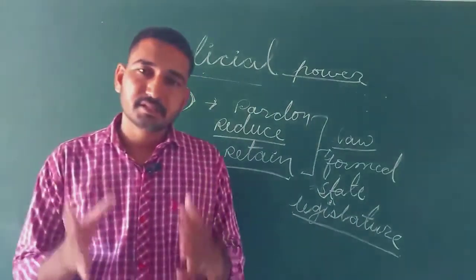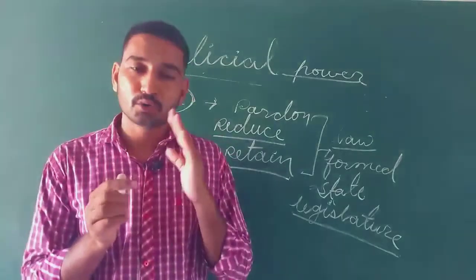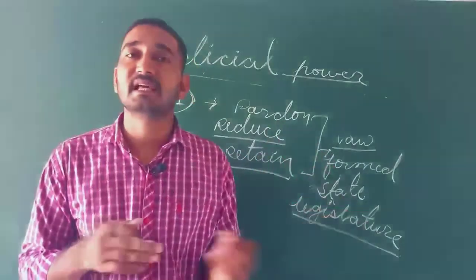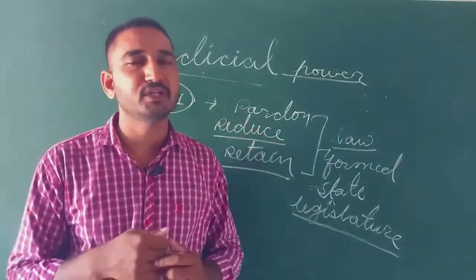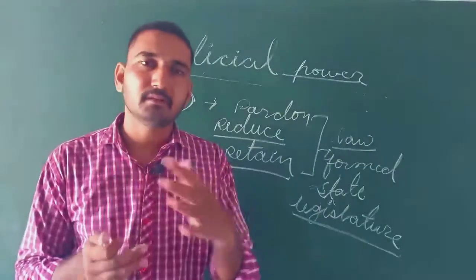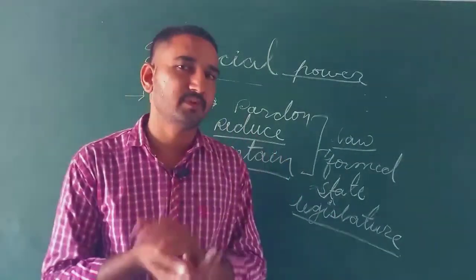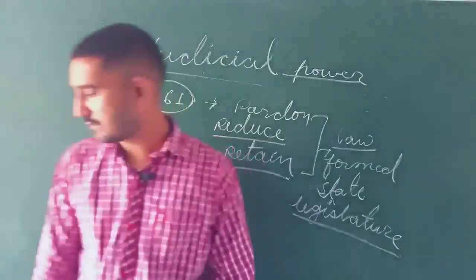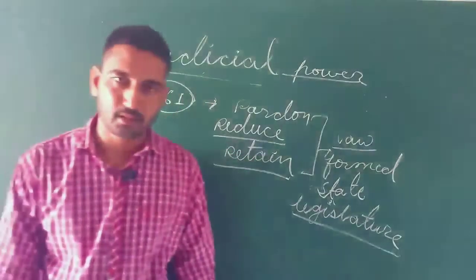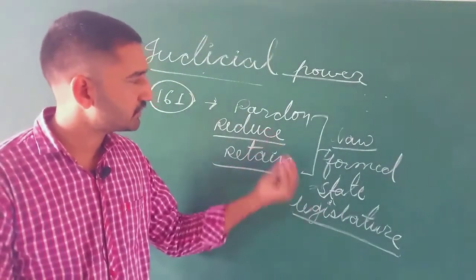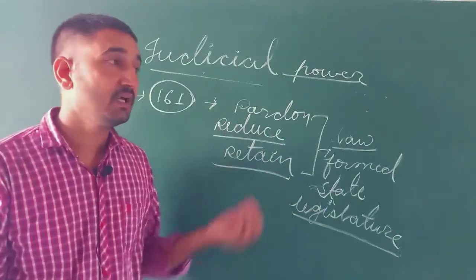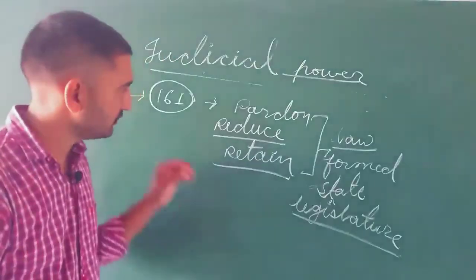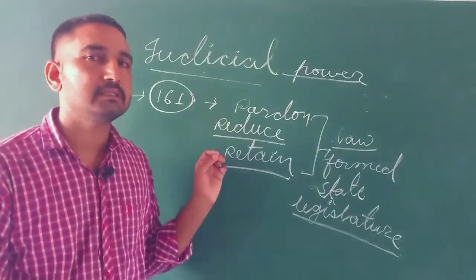We can say that the state government or state legislature has made a law, and in the violation of that law, they can punish people. In such a situation, the governor has a right to pardon, reduce, and retain the punishment of that convicted person charged for violation of any law formed by the state legislature. This is described in Article 161.